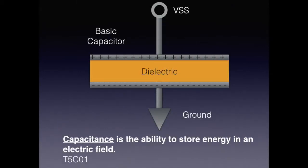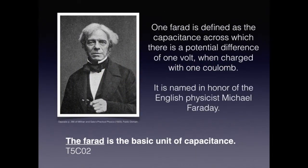Shown in this slide is the construction of a basic capacitor. It's simply two metal plates separated by a dielectric or an insulator. A capacitor is an electrical component that stores energy in an electric field, while capacitance is how we measure its ability to do so. For the exam, all you need to know is that capacitance is the ability to store energy in an electric field. Capacitance is measured in units called farads. For the exam, you need to know that the farad is the basic unit of capacitance.